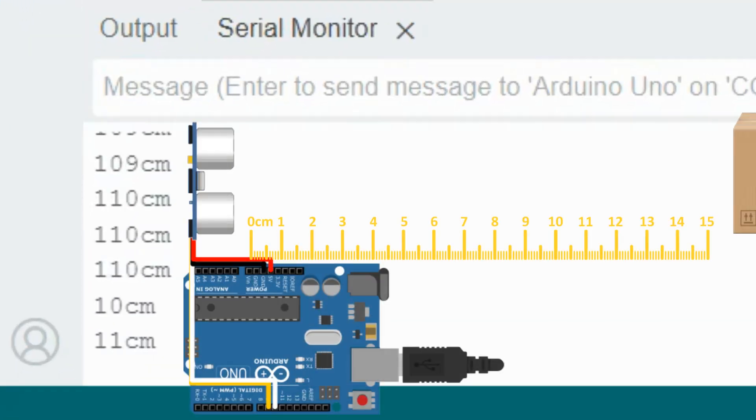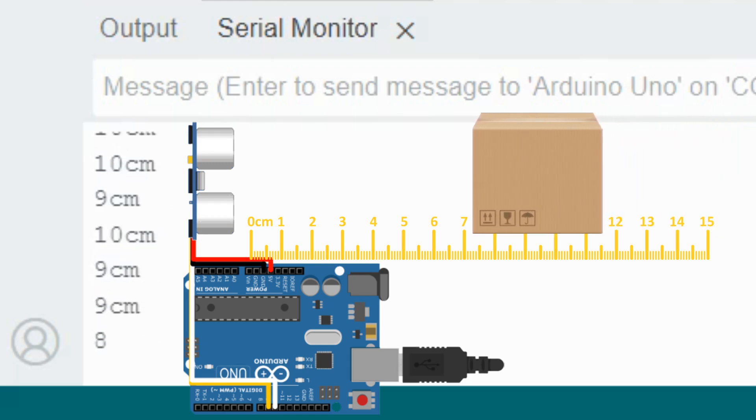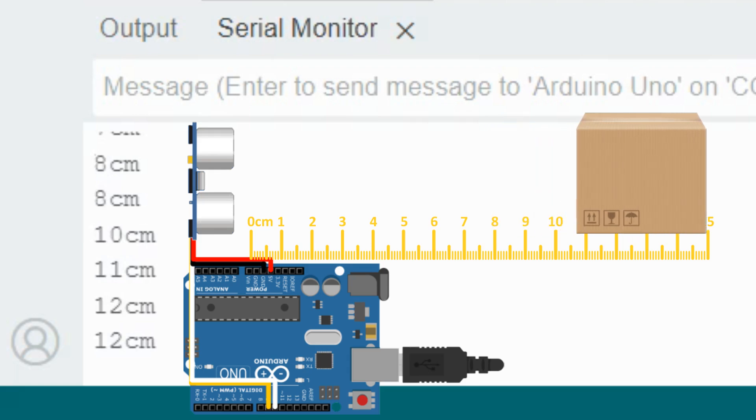Next, we place an object in front of the sensor and measure its distance using a ruler or scale. The measured distance should be very close to the readings on the serial monitor. Additionally, as we move the object back and forth, the distance values on the serial monitor should accurately reflect the changes in distance. This demonstrates the sensor's ability to provide real-time distance measurements with precision.